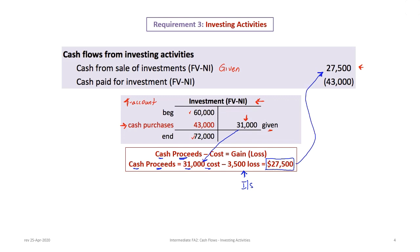These two items — cash from sale and cash paid to purchase investments — cannot be combined or netted out. A user needs to see both separately. This is critically important, which is why reconstructing the T-account is necessary. You cannot just take the difference between the beginning and ending balance. If you saw an ending balance of $72,000 and beginning of $60,000, you might say the change is $8,000 — but that would be wrong. The cash proceeds of $27,500 are added and the $43,000 paid to purchase investments is subtracted.